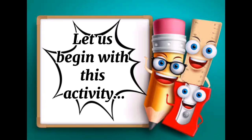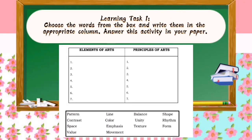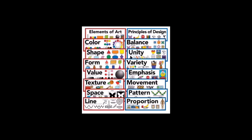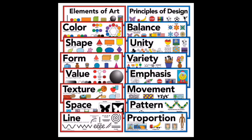Let's begin with Learning Task 1: choose the words from the box and write them in the appropriate column. Answer this activity in your paper. The elements of art are color, shape, form, value, texture, space, and line. The principles of design are balance, unity, variety, emphasis, movement, pattern, and proportion.